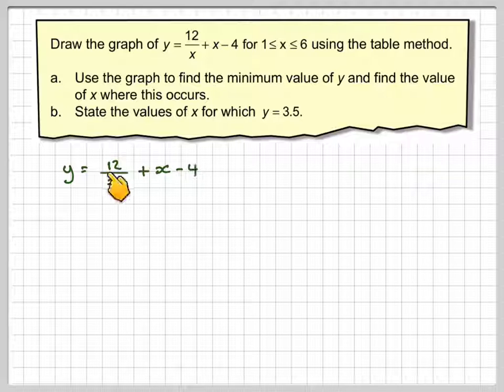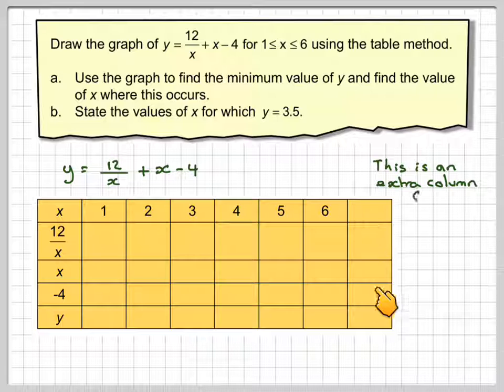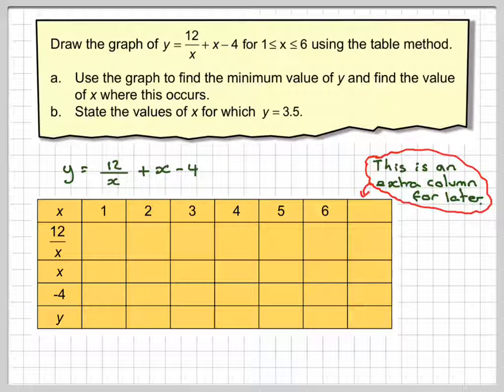We've got y = 12/x + x - 4, making a table. Our table goes from x: 1, 2, 3, 4, 5, 6. Now I'll put in an extra column here, we'll talk about that later. Break the function down to 12/x, plus x, minus 4. As I just said, this is an extra column which we'll talk about in a minute, which might or might not be necessary.